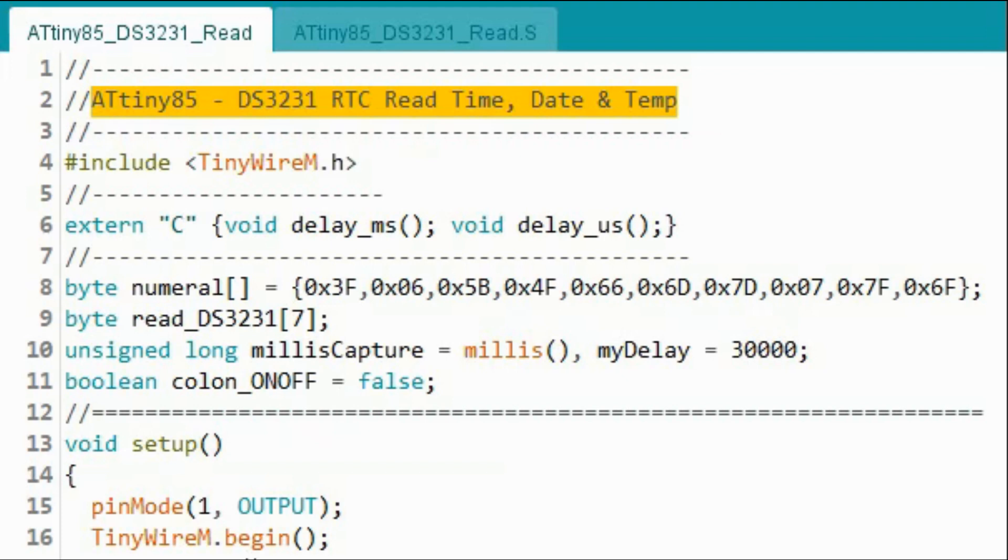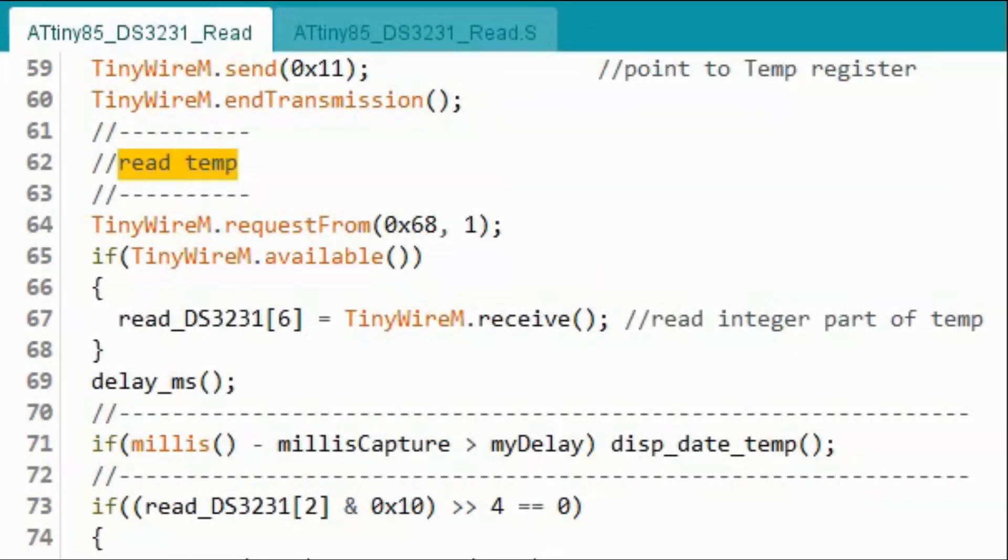The C code is the same code I presented in my previous video when I programmed the DS1307 real-time clock. Slight modifications are introduced to enable the display of temperature.